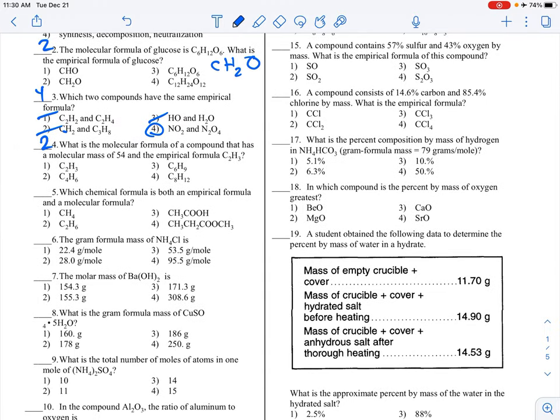Which chemical formula is both an empirical and a molecular, which means basically it's the simplest form. C2H4O2, well that's not simplest. Neither is that. C4 and then H5, nope. It's got to be choice 1.